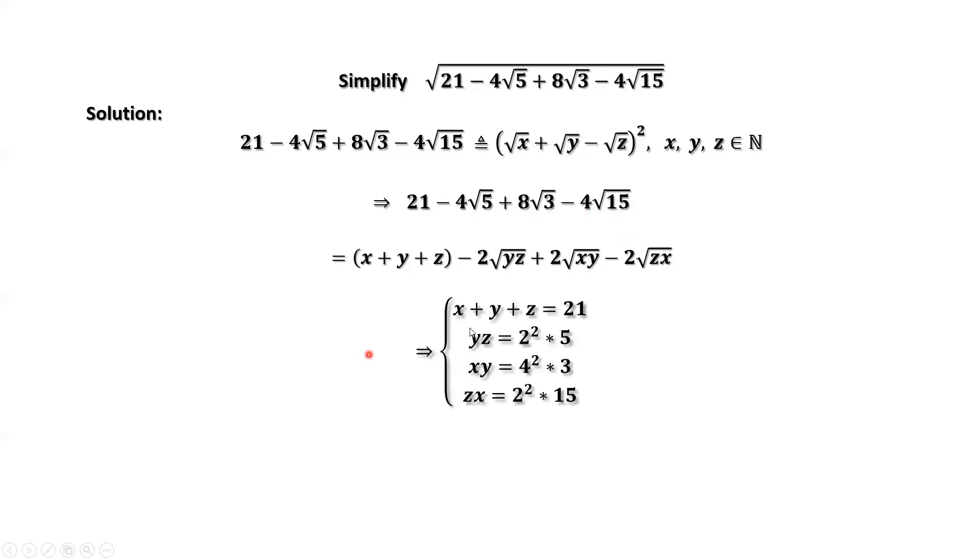In summary, x plus y plus z equals 21. Here, we have 2 square root of yz. 4 equals 2 times 2. We put another 2 inside of this square root. That's 2 square times 5.